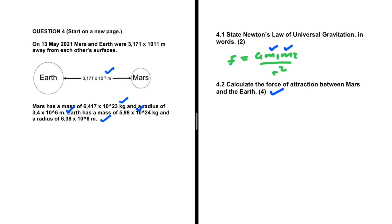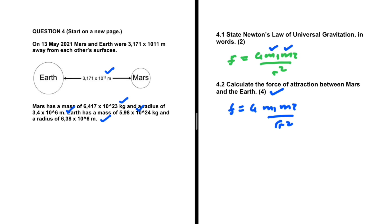We need to calculate the force of attraction between them using Newton's Law of Universal Gravitation: F equals G times m1 times m2, divided by r squared. G is the gravitational constant, m1 and m2 are the masses, and r is the distance between their centers. This is where many people make a mistake with the value of r.